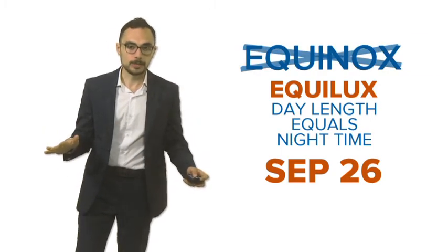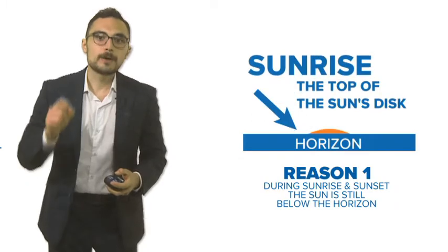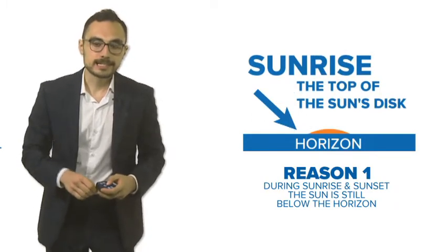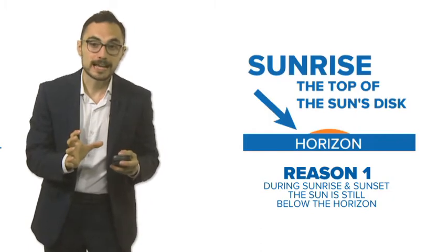So why is it that they aren't equal on the equinox? Well, the first reason has to do with the way that we measure the sunrise. The sunrise happens the moment that the top of the sun's disk touches the horizon, not when the center of the sun's disk touches the horizon.